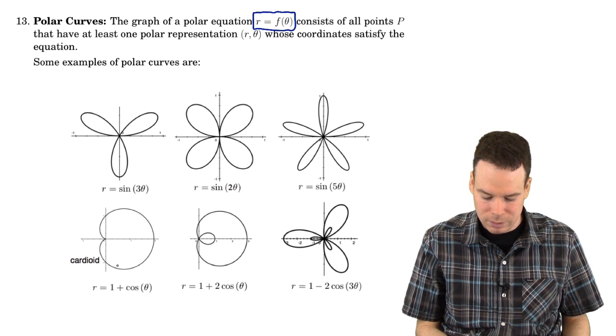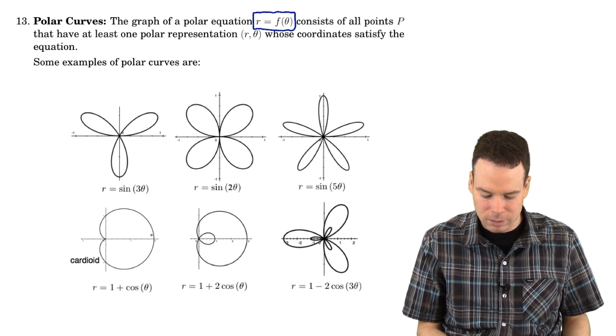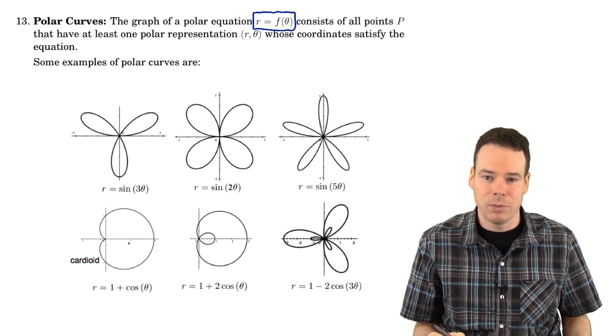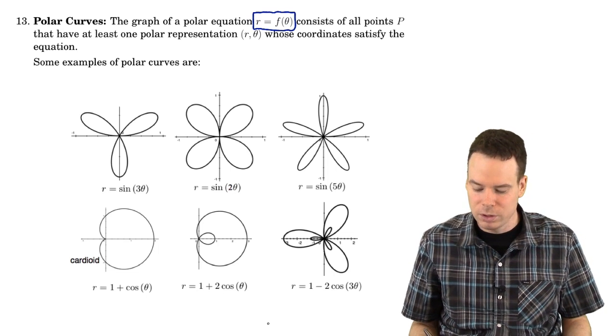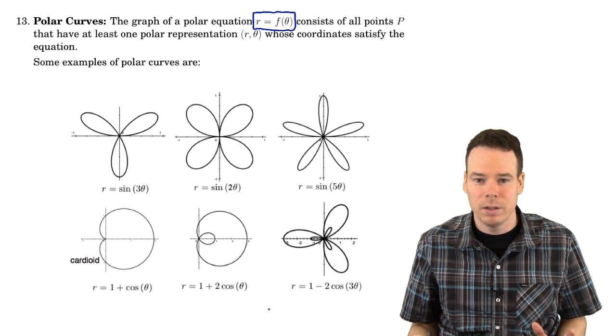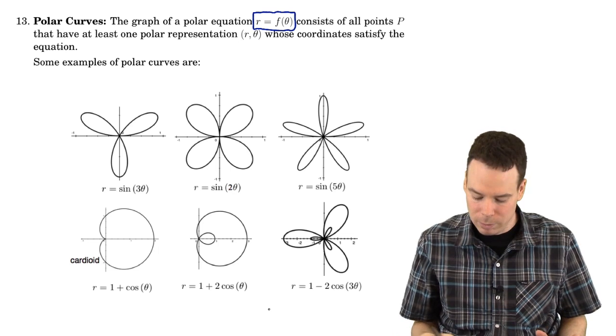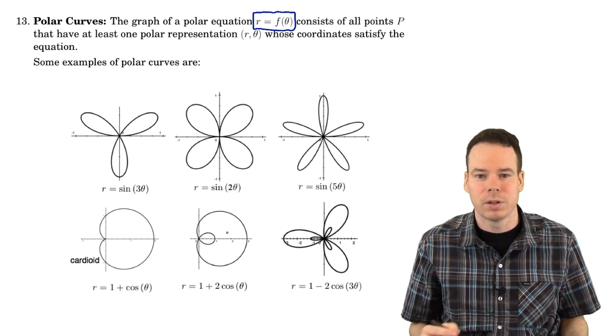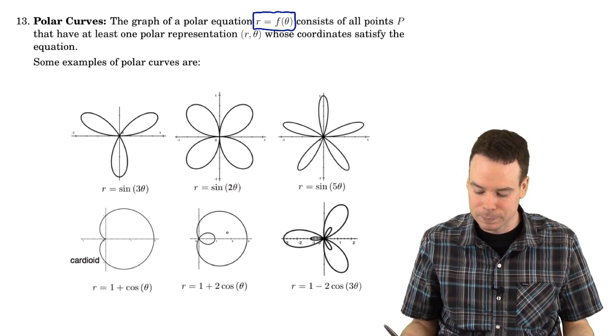There's 1 plus cos theta. It's called a cardioid because it kind of looks like a heart, at least if you turn your head sideways. Different variations on that. All of these ones may not look like it right now, but all of these ones we'll be able to plot by hand. We'll be able to look at this equation and be able to construct the plot by hand. That's really cool.